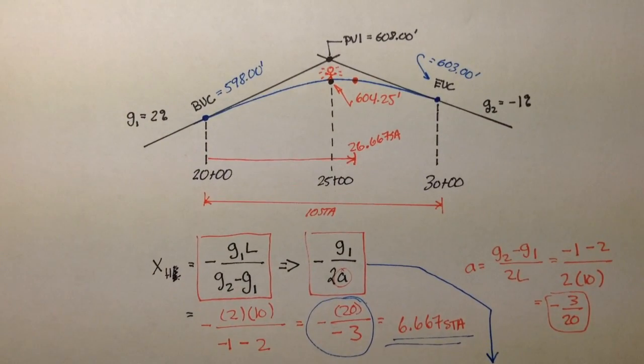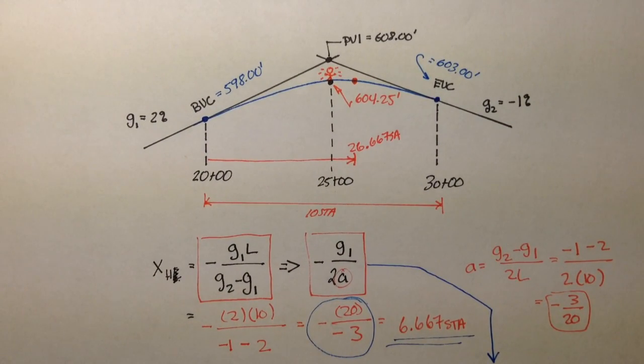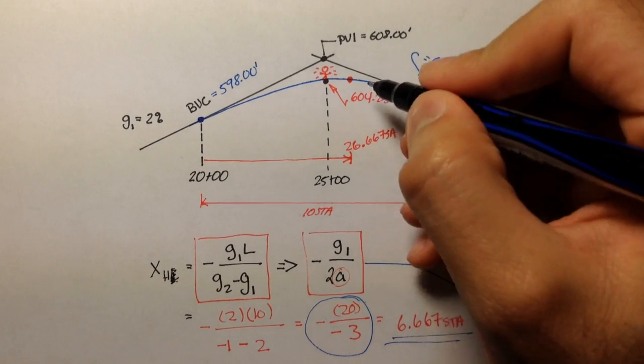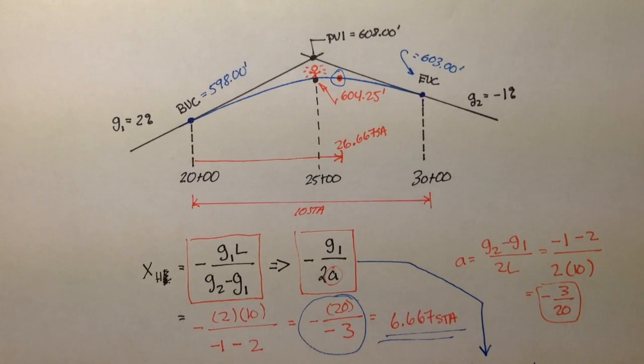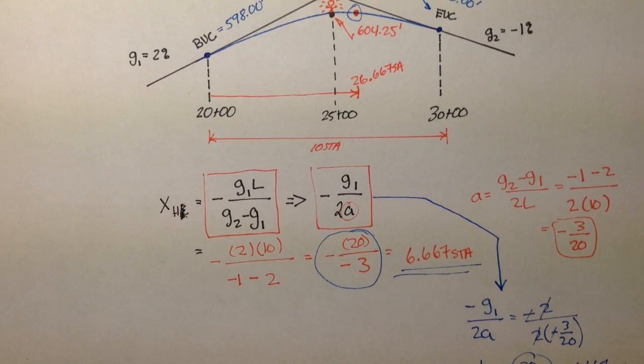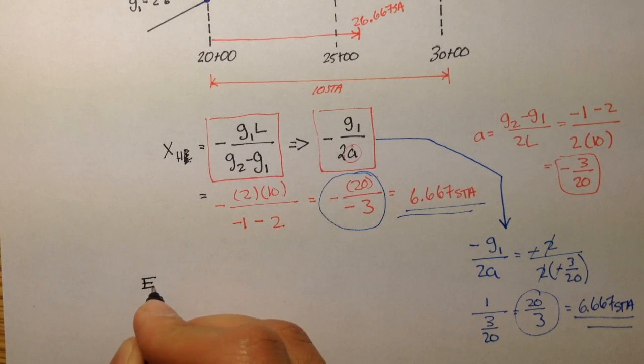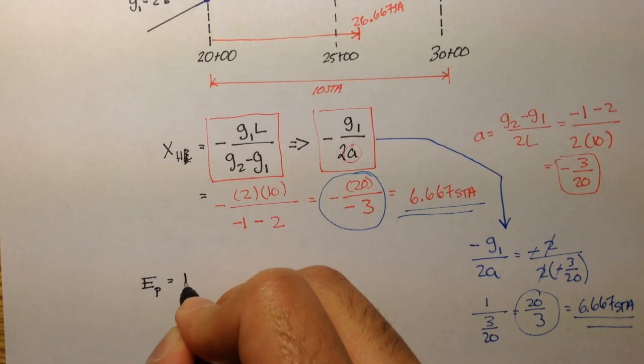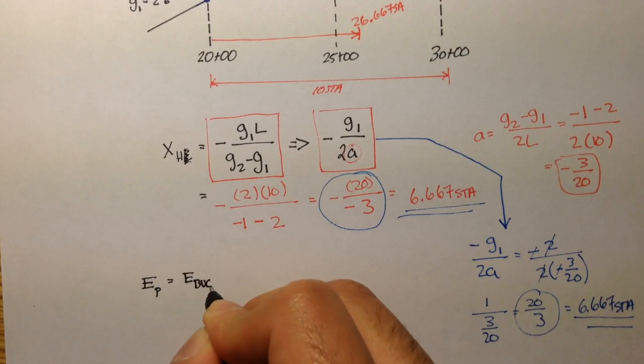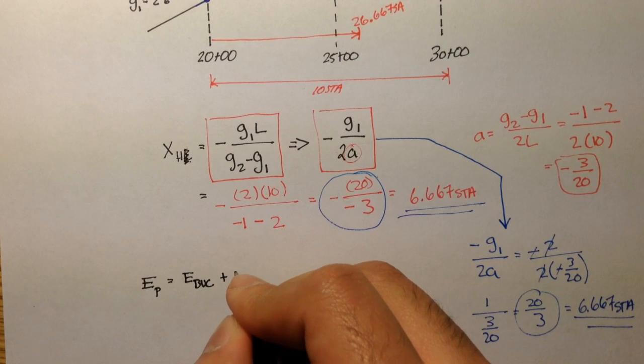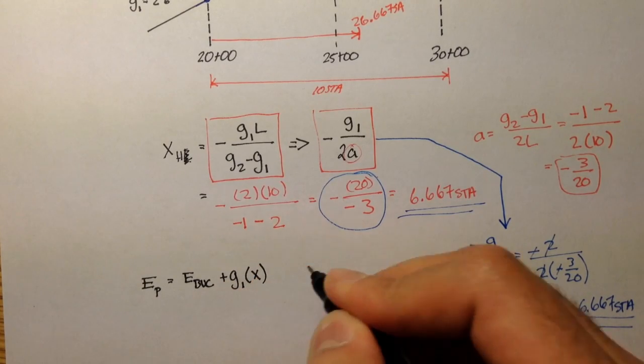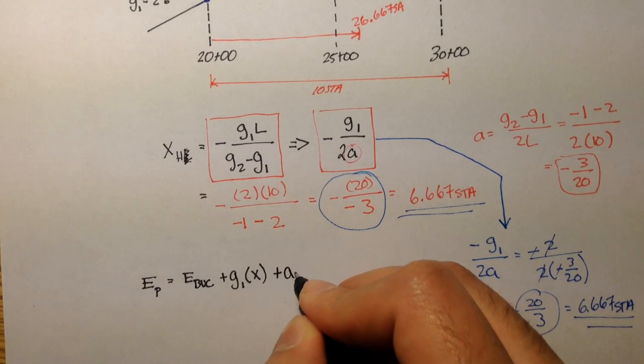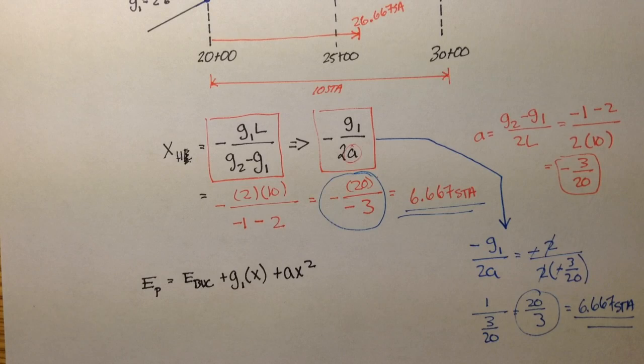Now that we've figured out where the highest point is located, we can use this information and figure out what the elevation of that point is. And remember, our elevation equation is the elevation of any point along a vertical curve is equal to the elevation of the beginning of vertical curvature plus the entering grade times that distance, or times any distance, plus ax squared.